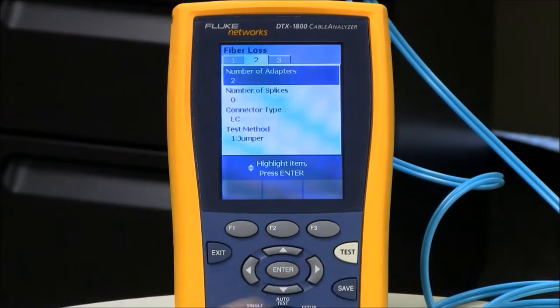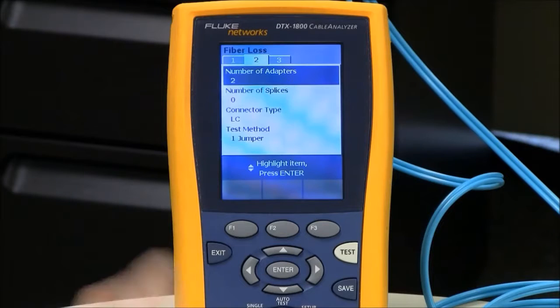Then we'll go across to tab number 2, where we see the number of adapters. This is an important setting, because this is going to affect your test limit. It's set to 2, because the link I'm testing today is a simple patch panel to a patch panel. I have a bulkhead adapter at one end and a bulkhead adapter at the other end. Two adapters. And because I'm not setting a reference through a bulkhead adapter, then my adapter count is going to be 2.